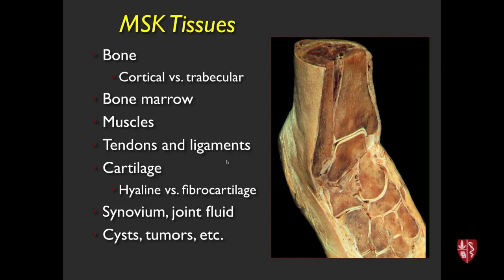The key tissues we look at in MSK imaging are: bone, bone marrow, muscles, tendons and ligaments, and cartilage. Much of what we do day-to-day is look at things that were recently normal but are now torn or deranged — fractures, torn ligaments, torn meniscus, cartilage degeneration. There is also a subset involving oncology like bone tumors, but primary bone tumors are fairly rare in the MSK system, so we deal mostly with detailed anatomy and derangements of that anatomy.